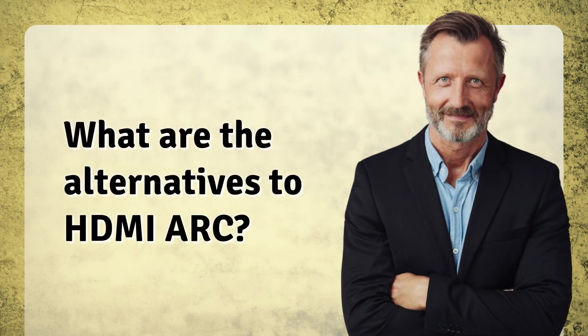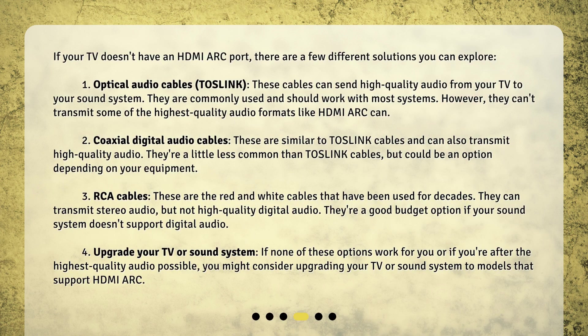What are the alternatives to HDMI ARC? If your TV doesn't have an HDMI ARC port, there are a few different solutions you can explore. First, optical audio cables — Toslink. These cables can send high quality audio from your TV to your sound system. They are commonly used and should work with most systems. However, they cannot transmit some of the highest quality audio formats like HDMI ARC can.